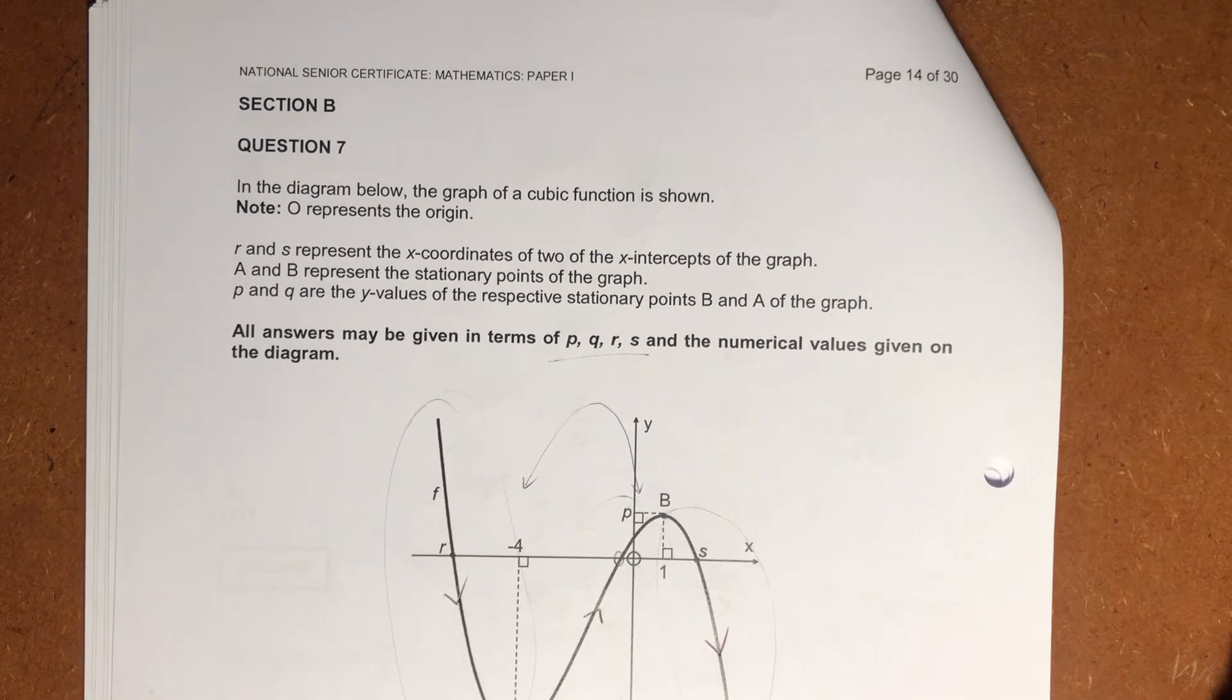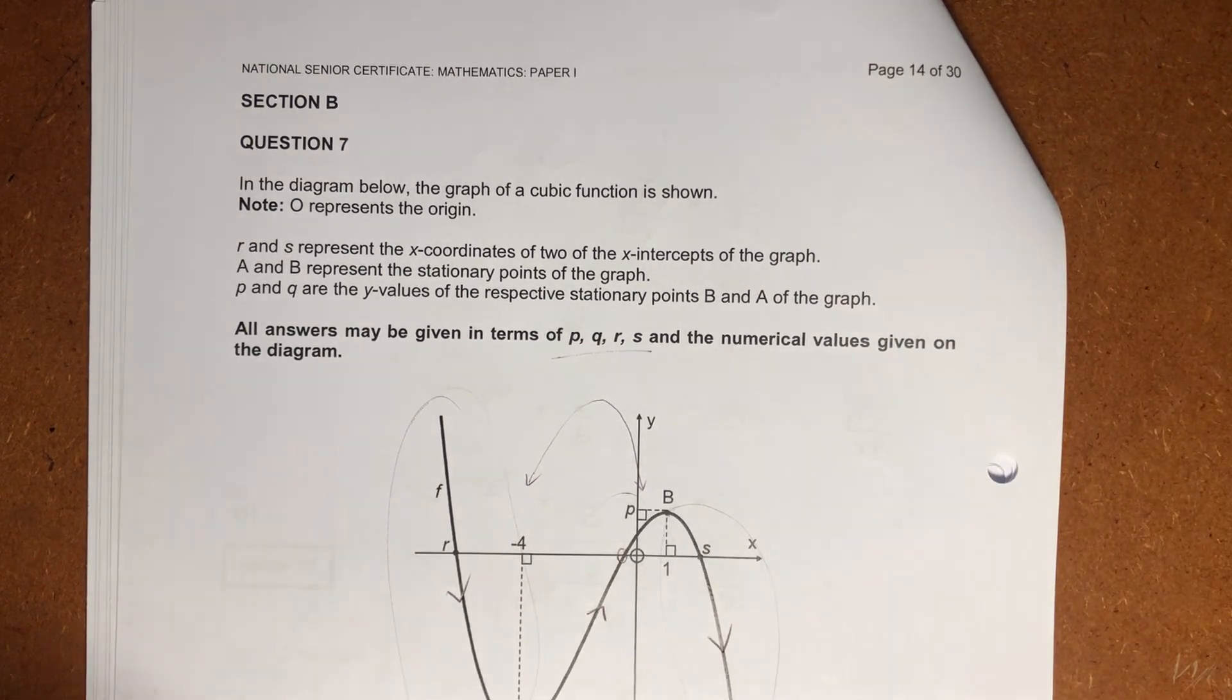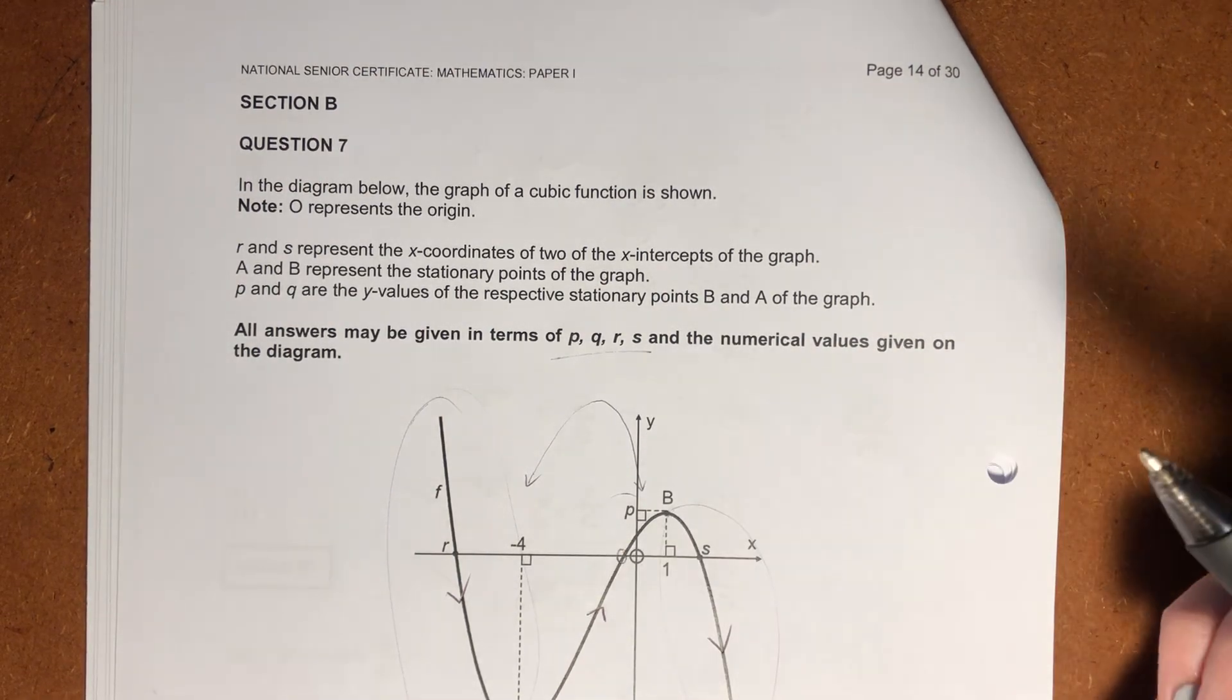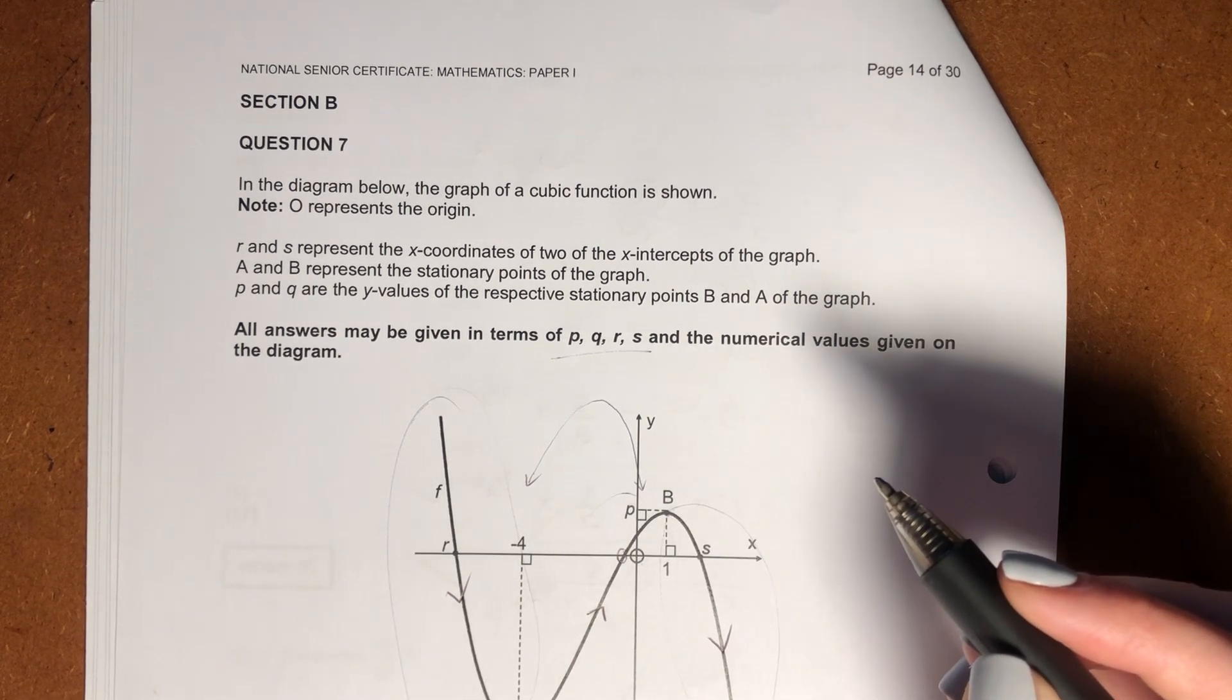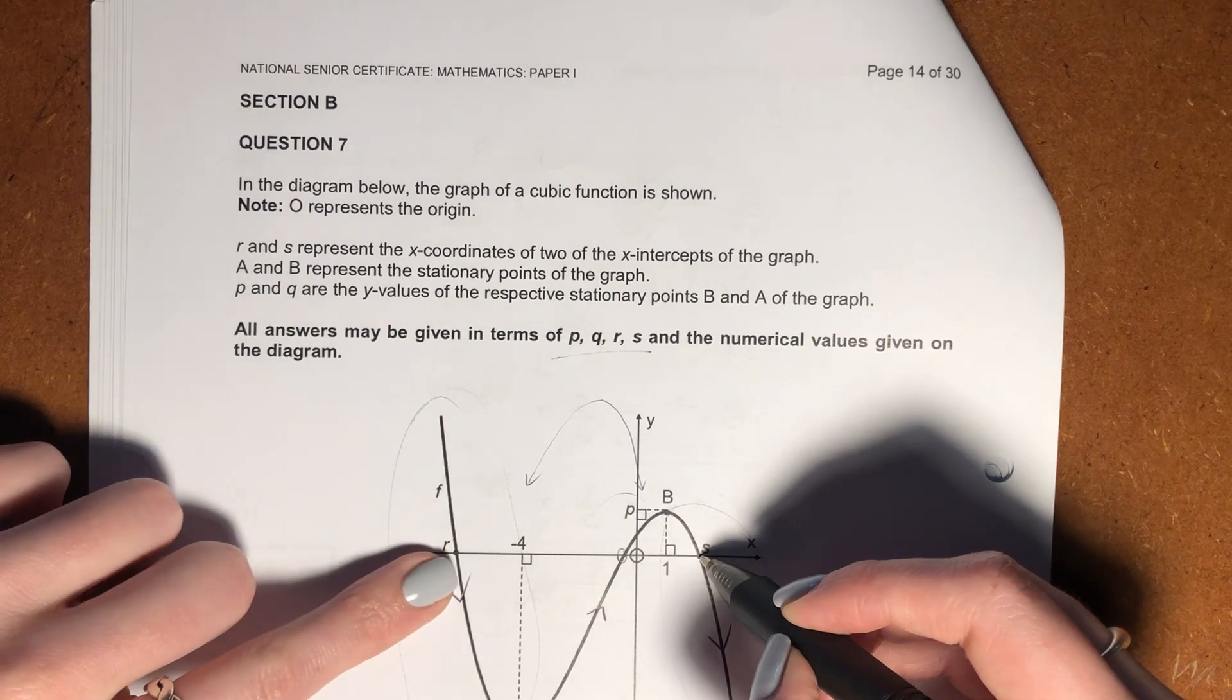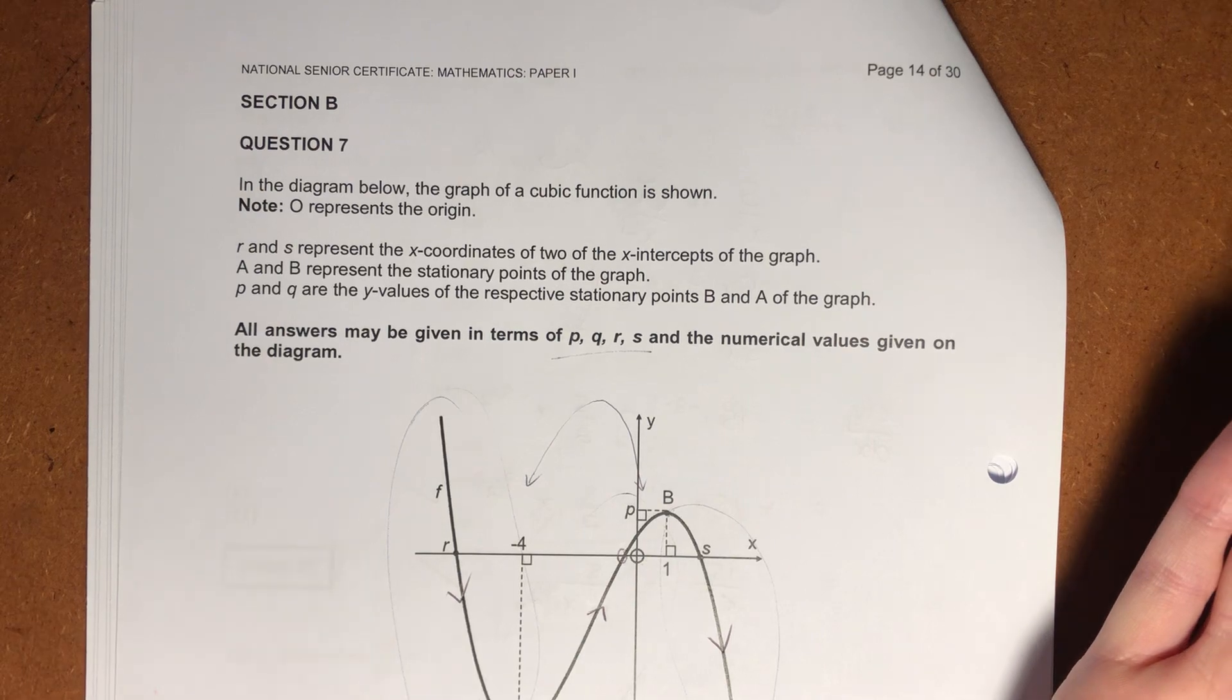So let's see what information is given, which can help us in answering our questions. It says, in the diagram below, the graph of a cubic function is shown. O is origin, and R and S represent the x-coordinates of two of the x-intercepts of the graph. So there they are there, but they haven't given us this x-intercept there. We just don't know what it is at this point.